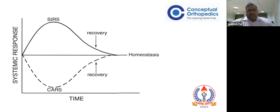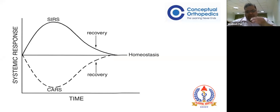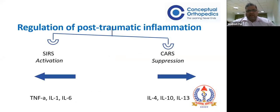The SIRS peaks and there is a corresponding peak of the counter-anti-inflammatory regulatory system. Depending on whether the patient has an increased peak of pro-inflammatory or anti-inflammatory response, there could be SIRS or septicemia. If both go in parallel and come down over time, there will be recovery. The SIRS-related factors are tumor necrosis factor alpha, interleukin-1, and interleukin-6, leading to MODS. The counter-regulatory anti-inflammatory response involves interleukin-4, 10, and 13 - when decreased, it causes a hypoimmune response leading to septicemia.